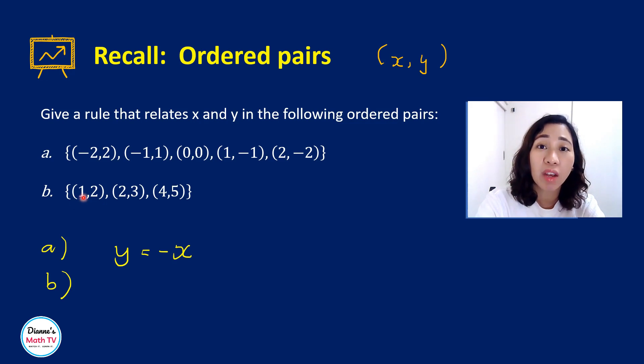You're just always adding 1 from your x-coordinate. Correct? The y-coordinate, for example, 2 is 1 plus 1, 3 is 2 plus 1, 5 is 4 plus 1. So our rule here is that y is equal to x plus 1.